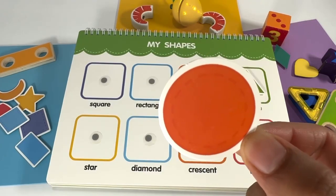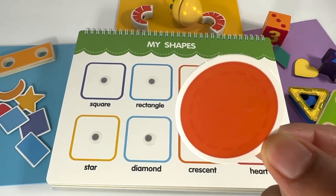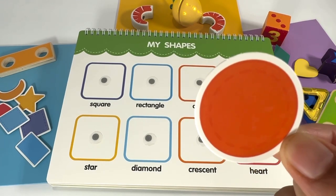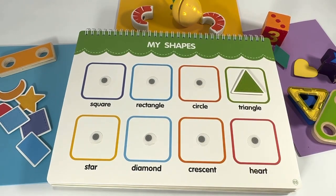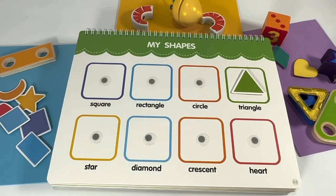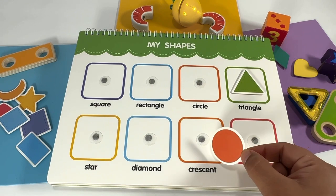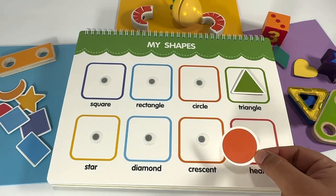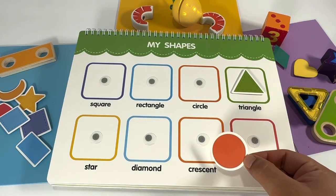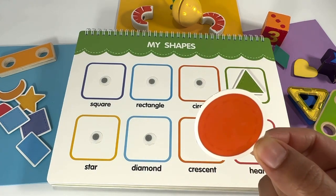Circle — circle starts with the letter C. Can you find any shape here that starts with the letter C? This one — but this is a crescent, and this is a circle.